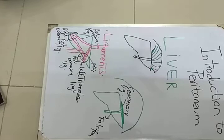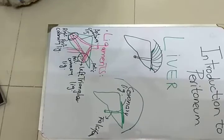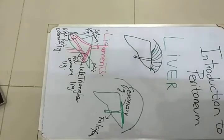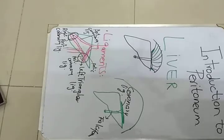I would like to clarify two major concepts: intraperitoneum and retroperitoneum. Retroperitoneum refers to those structures which are present outside of the peritoneum — the peritoneum does not enclose them. Intraperitoneum refers to those structures which are present inside the peritoneum, or which the peritoneum encloses completely. This was the introduction of the peritoneum. Thank you.